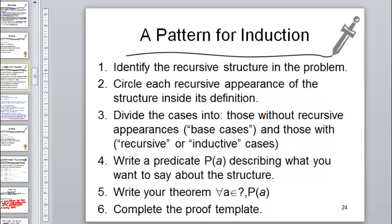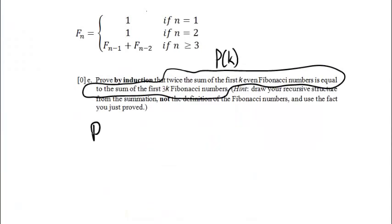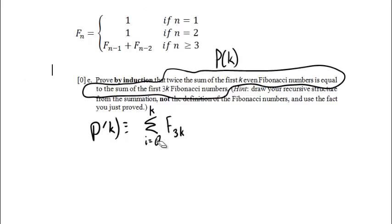Let's write out the summation explicitly to make the recursive structure clearer. Another way of writing P(k) is: 2 times the summation from i equals 1 to k of F sub 3i is equal to the summation from i equals 1 to 3k of F sub i. We start at i equals 1 because F_0 isn't defined. We know that summation covers the first k even Fibonacci numbers because of the previous proof.